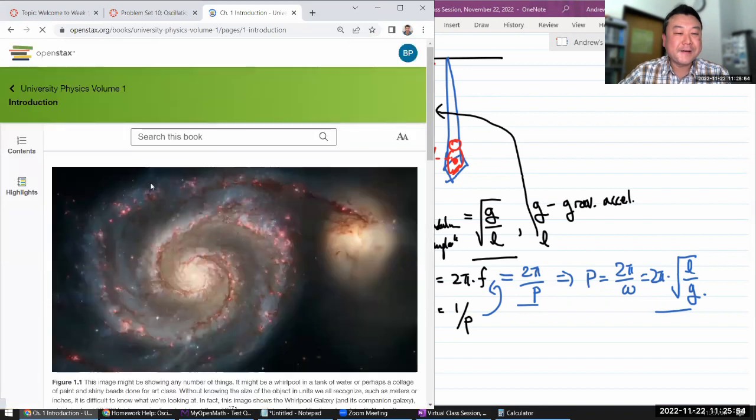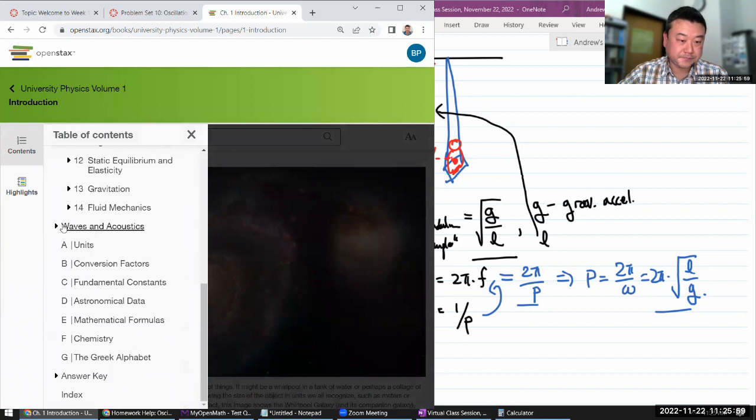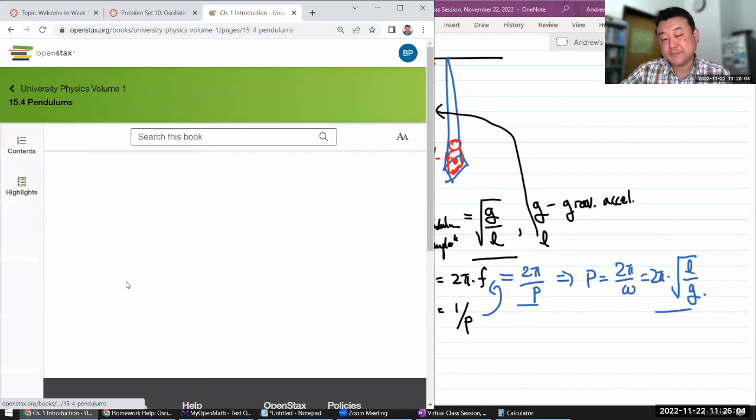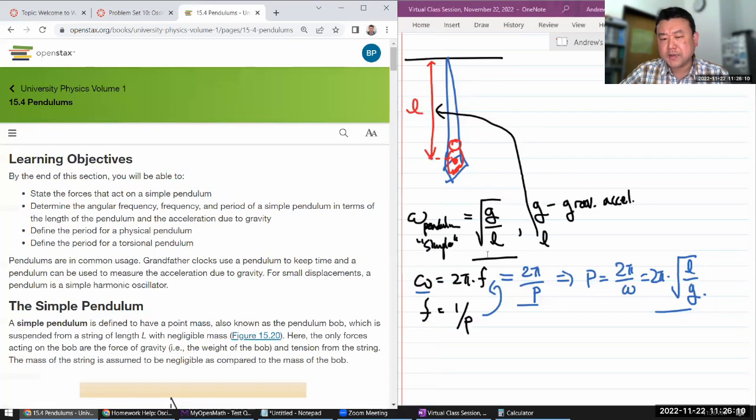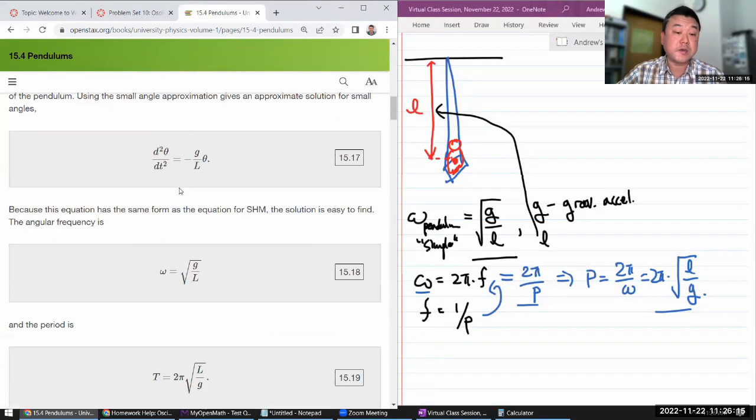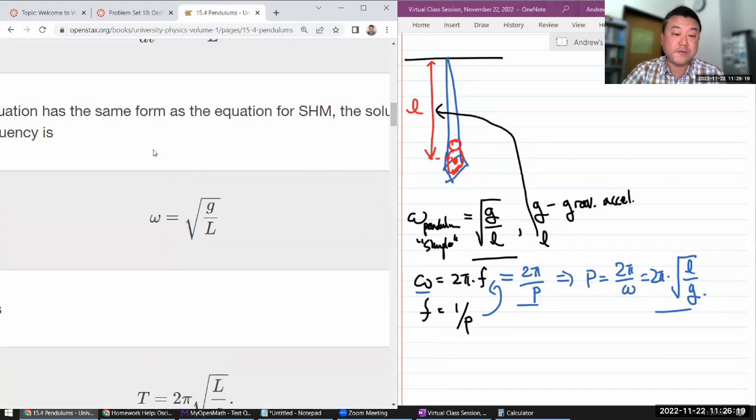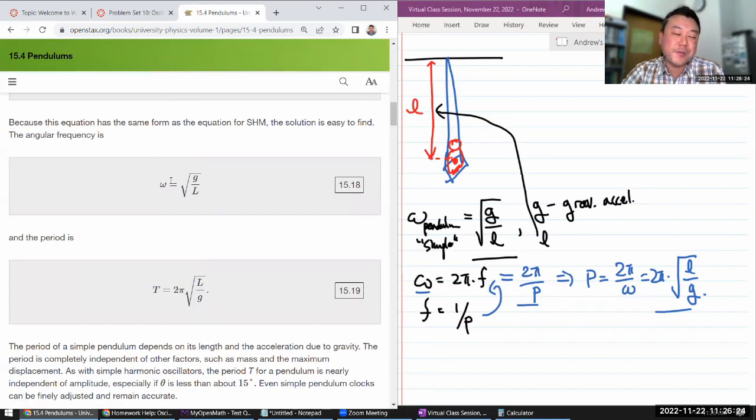So your textbook has a chapter on oscillations, which is what this week's assignments are, and within the chapter for oscillations it has a section on pendulums. The formula that's least likely to be memorized outright is the one for angular frequency or the natural oscillation frequency.